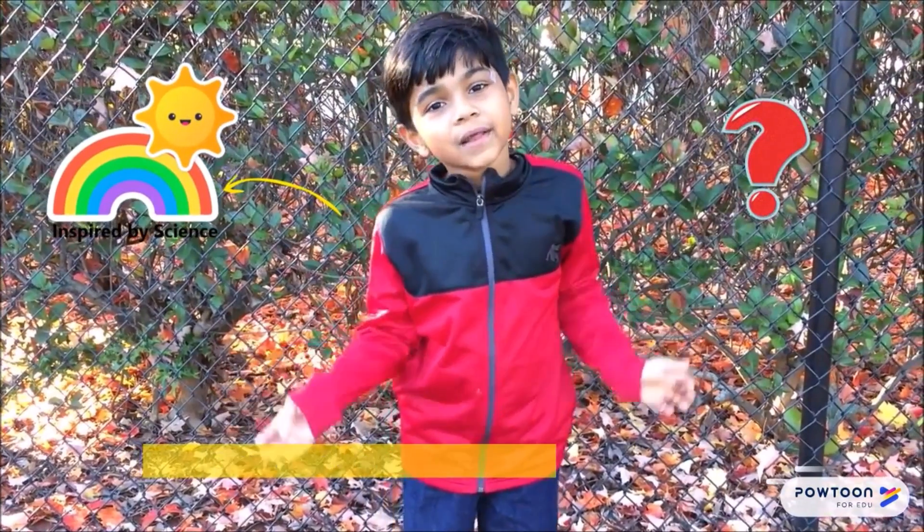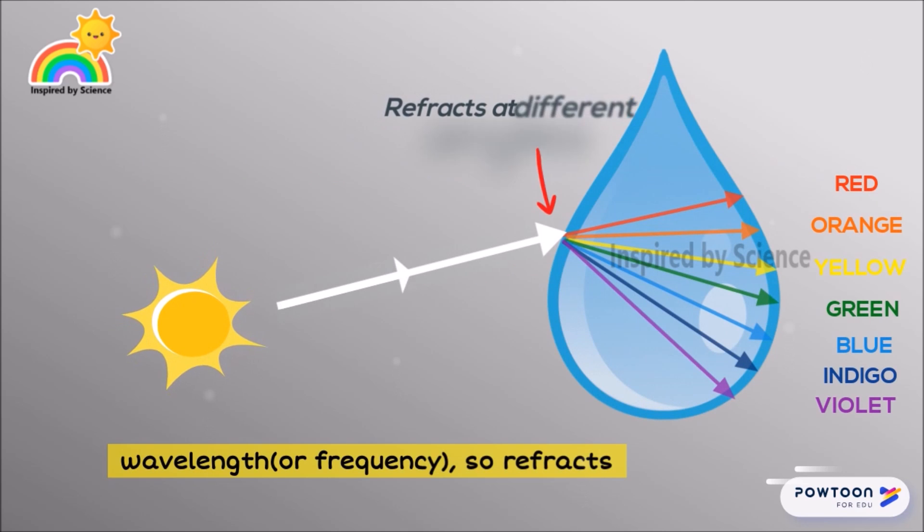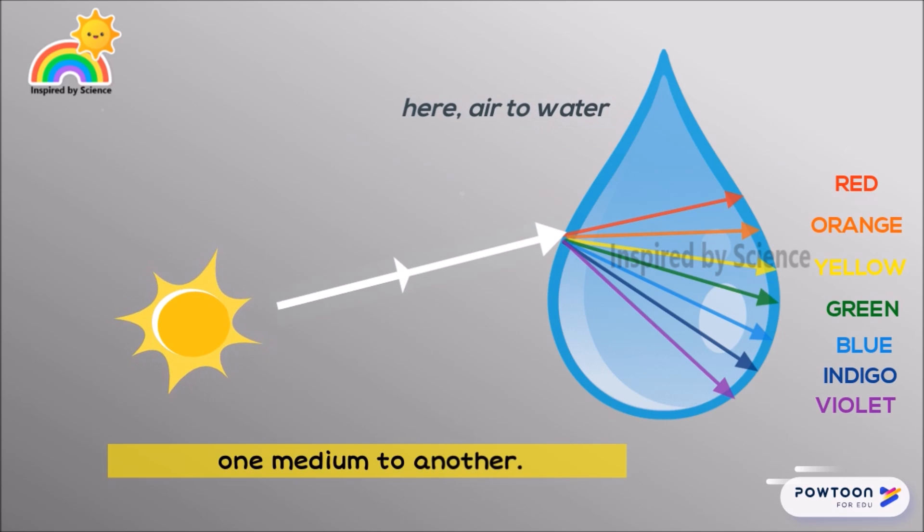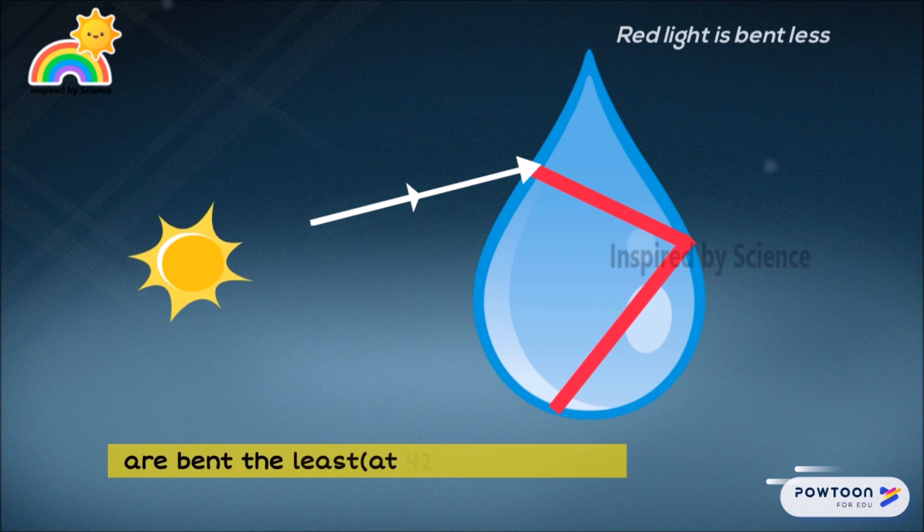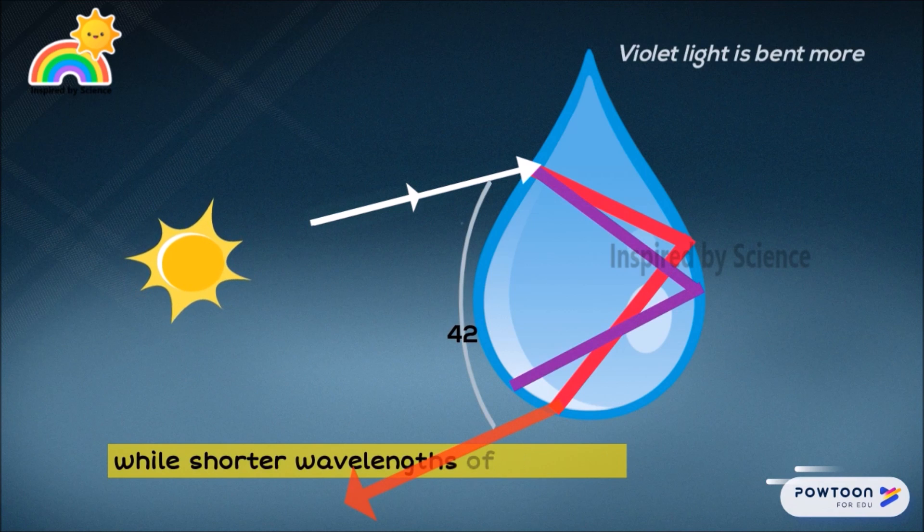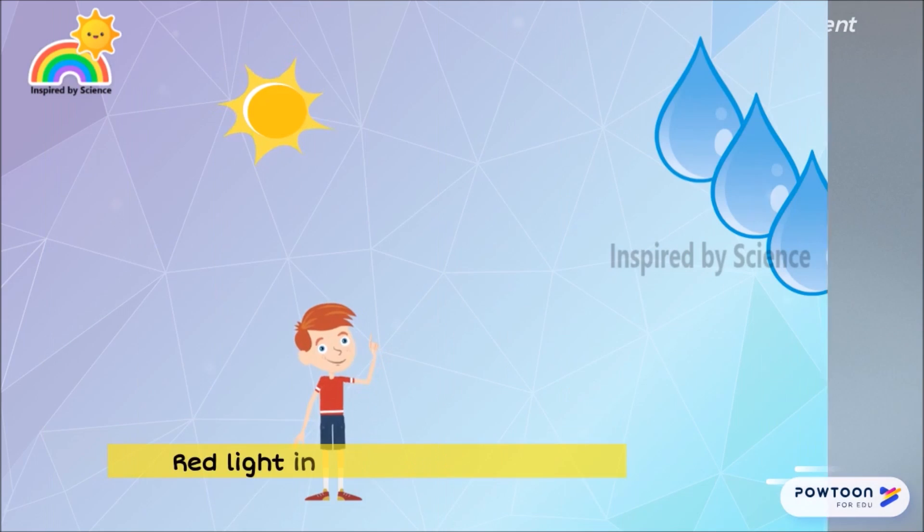But why is red always on top of a rainbow? Each color has a different wavelength so it refracts differently when passing from one medium to another. Longer wavelengths of red light are bent the least while shorter wavelengths of violet are bent the most.